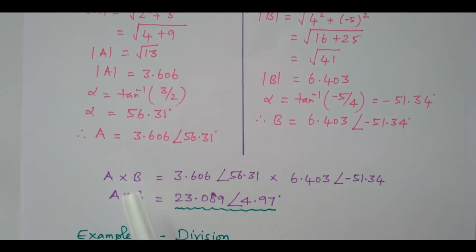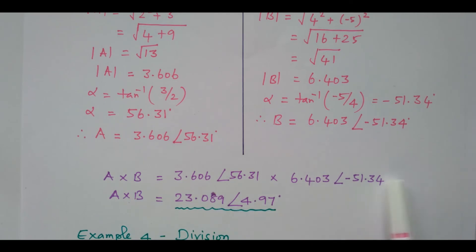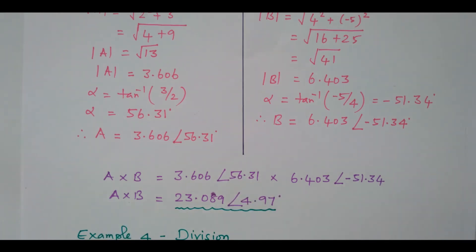So A into B. A is nothing but 3.606 with an angle of 56.31. B is nothing but 6.403 with an angle of minus 51.34. Then how will you multiply these two? You have to multiply the two magnitudes. For multiplication, magnitudes are multiplied, giving 23.089. What about the angle? For multiplication, the angles should be added together.